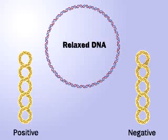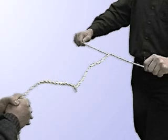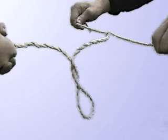Supercoils can be positive, coiling in one direction, or negative, coiling in the other. Positive supercoiling results from overwinding, like this rope.